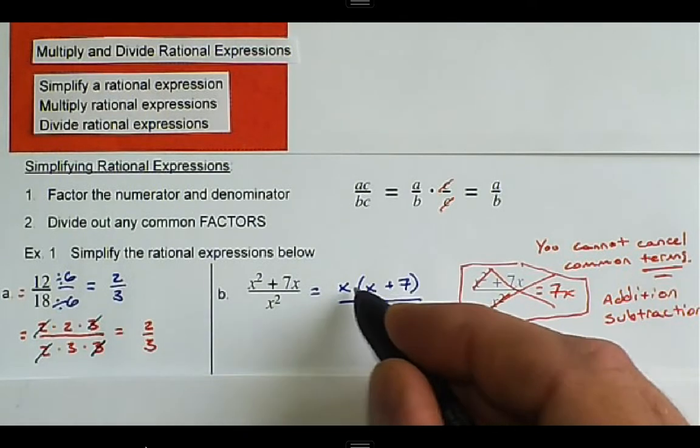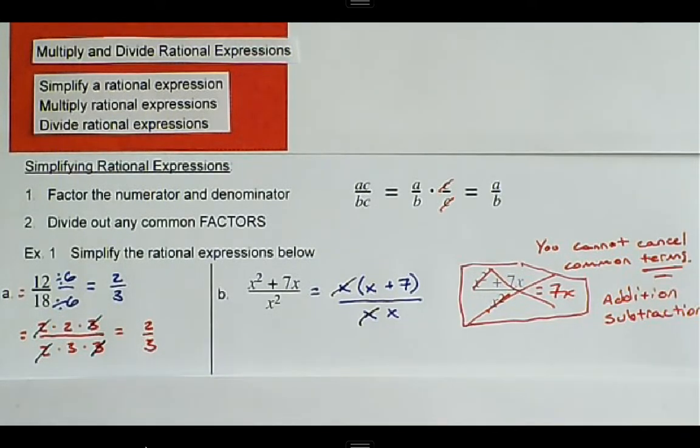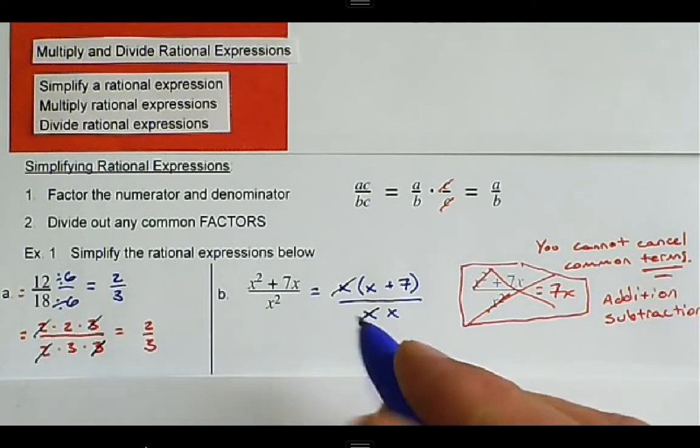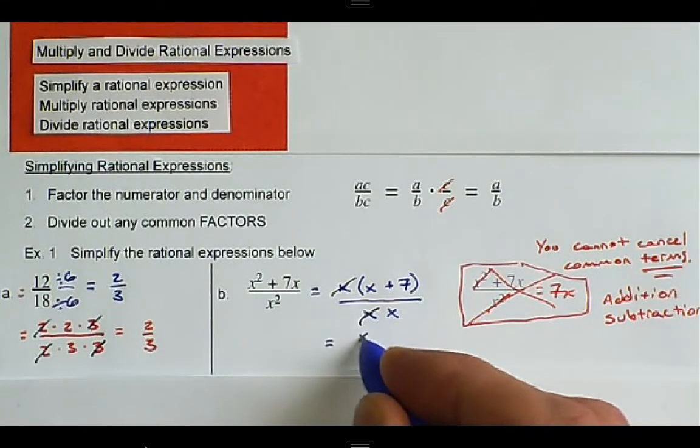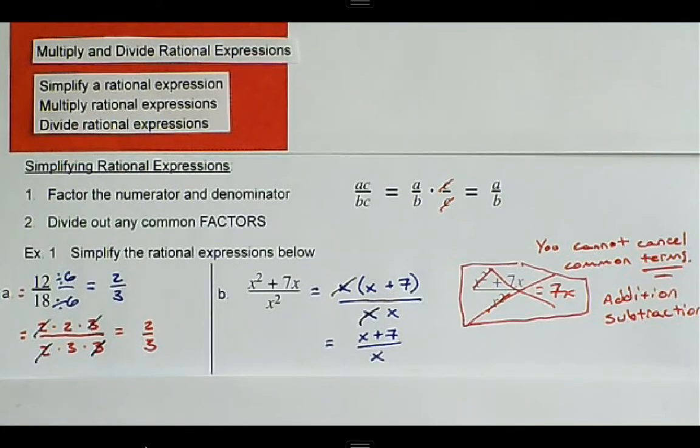So, here in this one, we have x divided by x, and what we're left with is just x plus 7 divided by x. And that is in the simplest form.